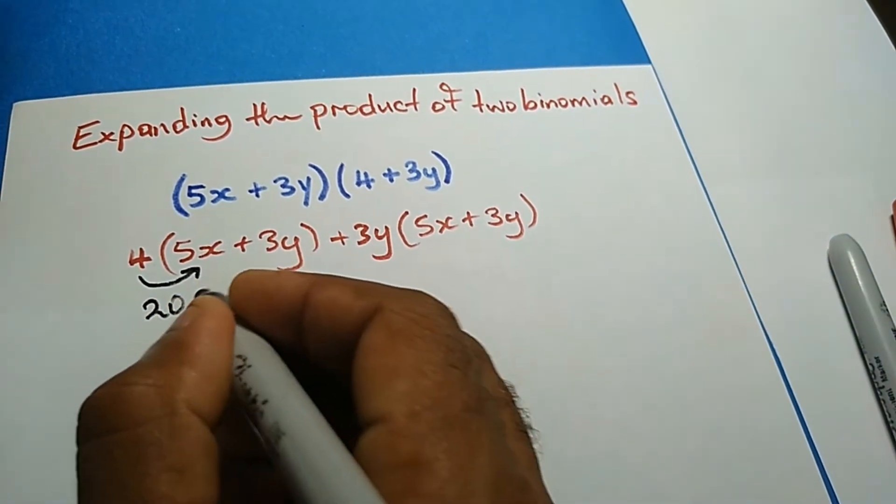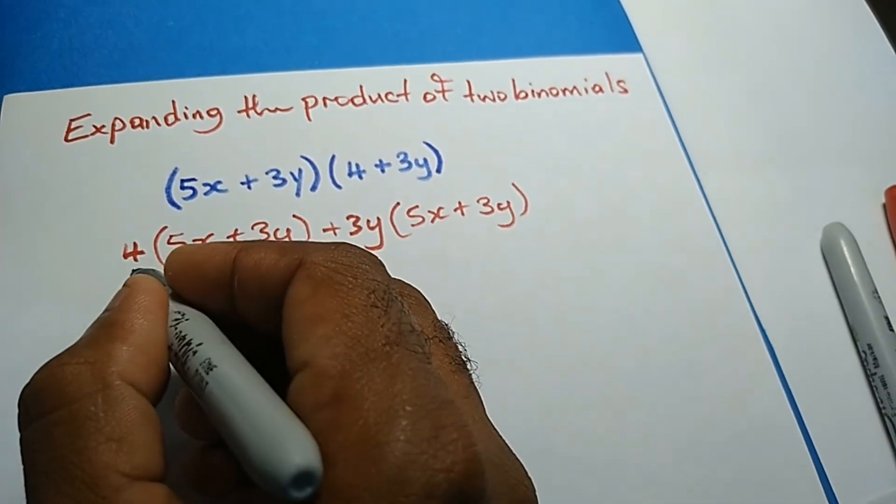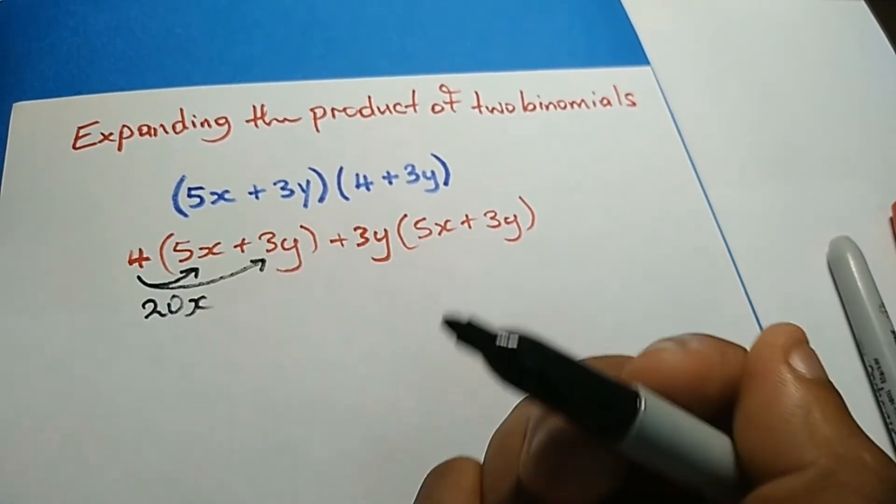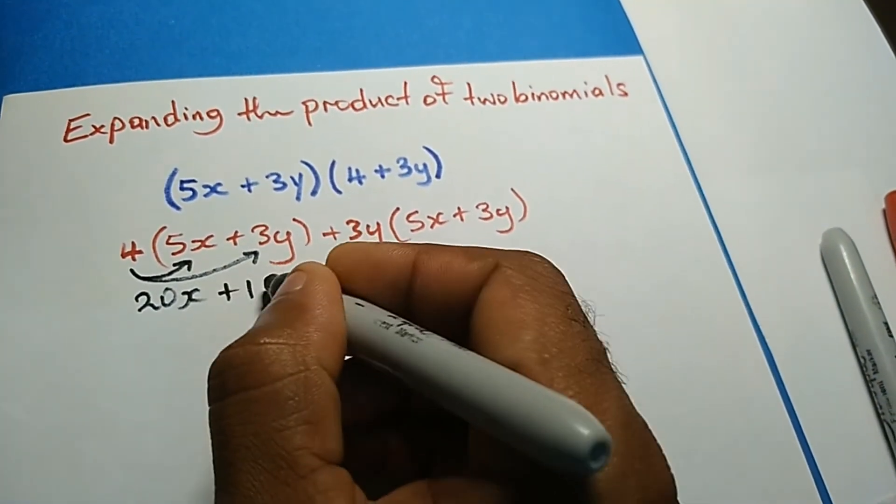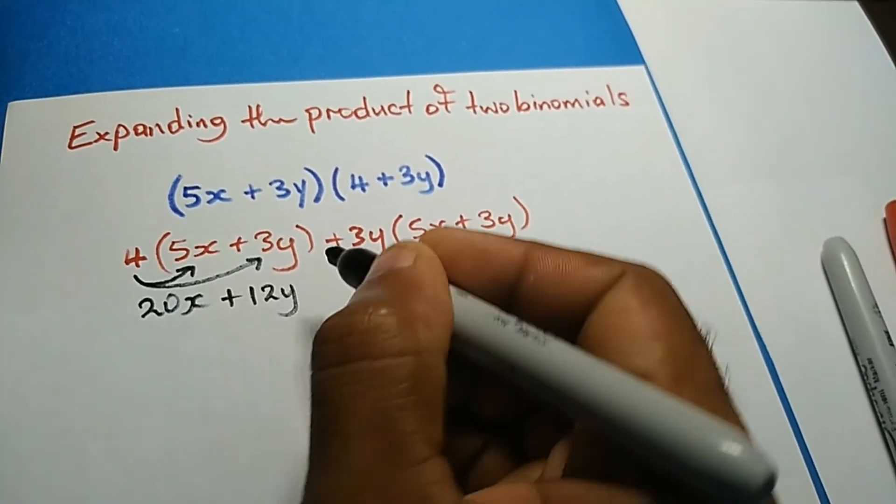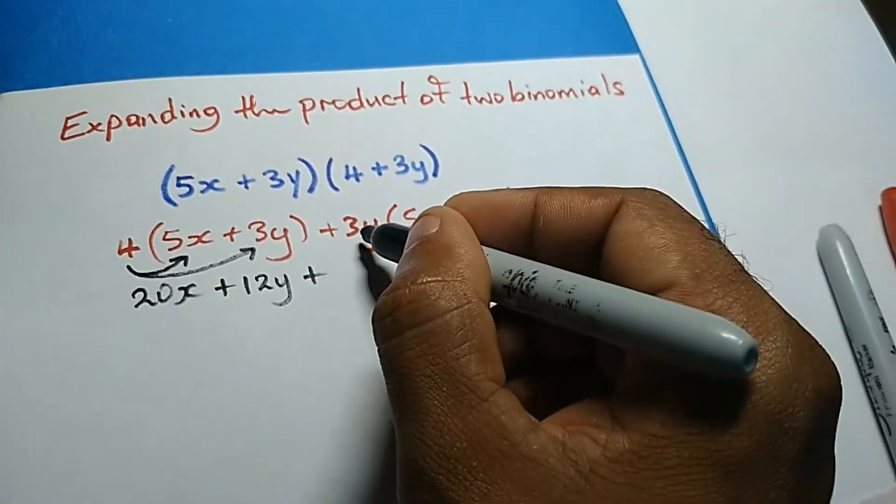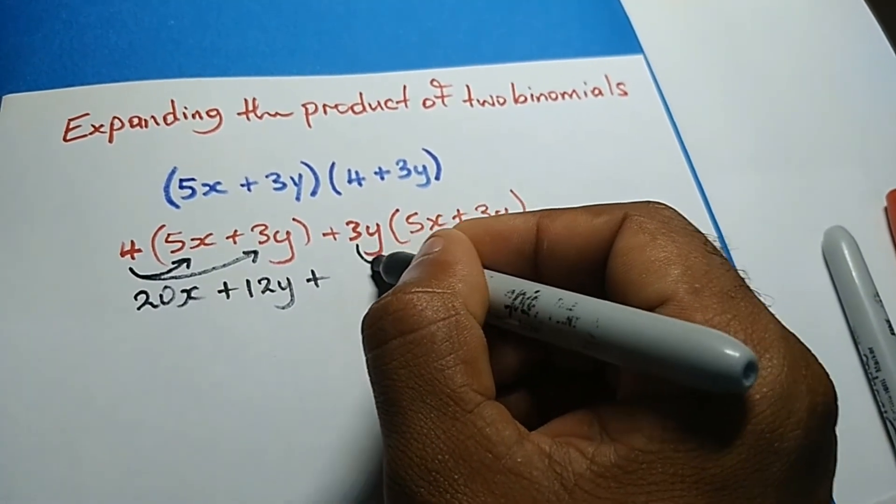And 4 times 3y gives me 12y. Plus, I'm going to use this 3y to multiply the second bracket.